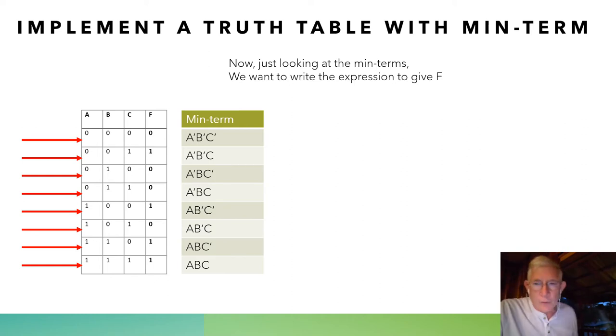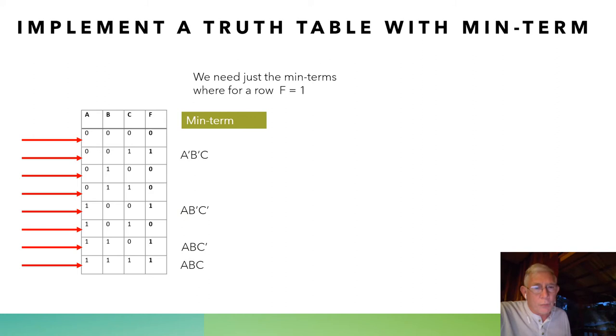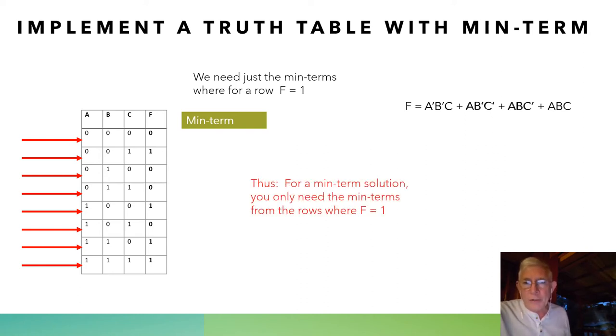Now, when we want to write the representation for F, we only use the min-terms where the rows where F is one. And then we take the min-terms from those rows and we arrange them basically in any order we want. We or them together. That's indicated by the plus sign. And of course, the multiplication implied here is the anding. So these are and terms ored together. Thus, for a min-term solution, you only need the min-terms from the rows where F equals one.